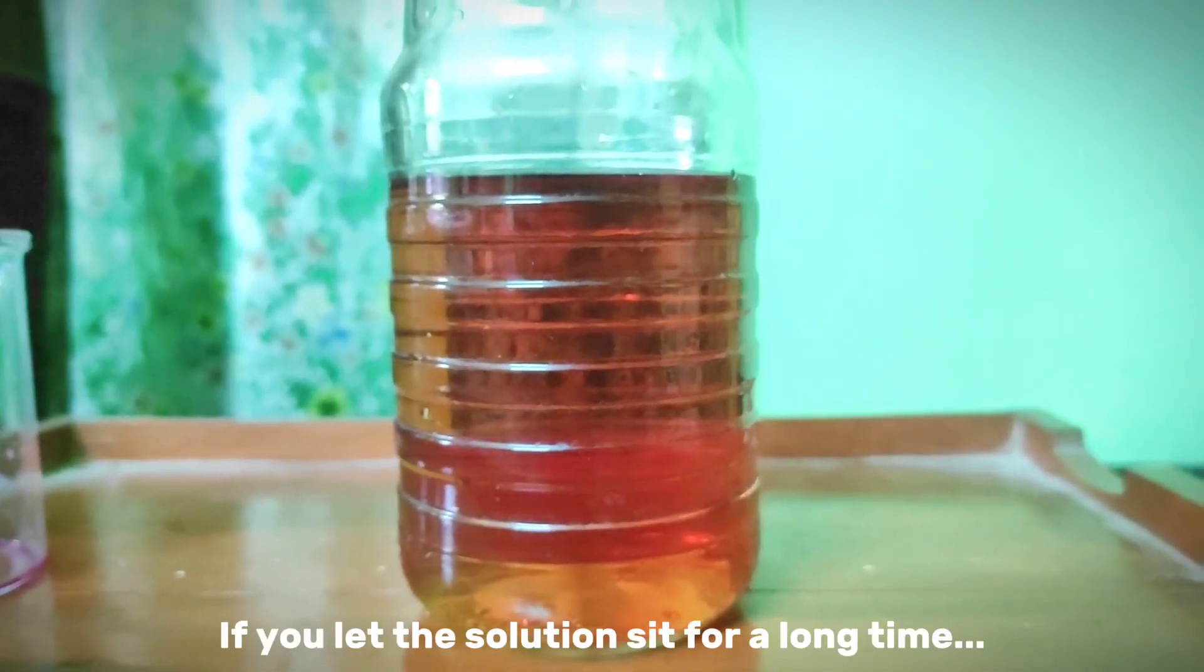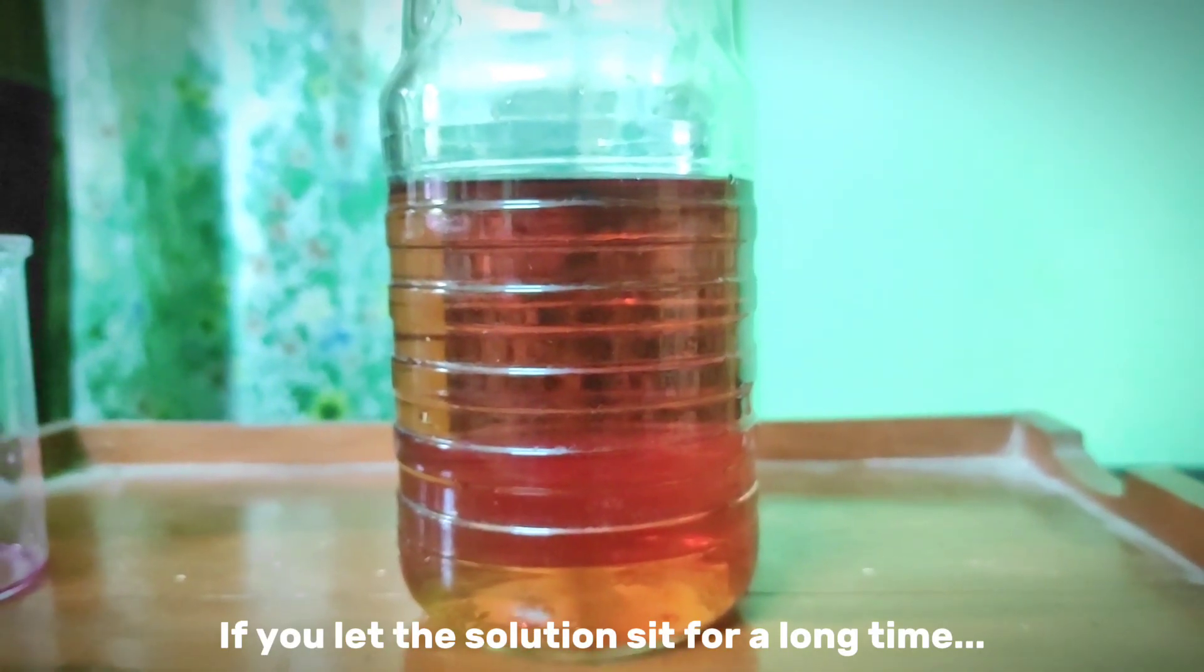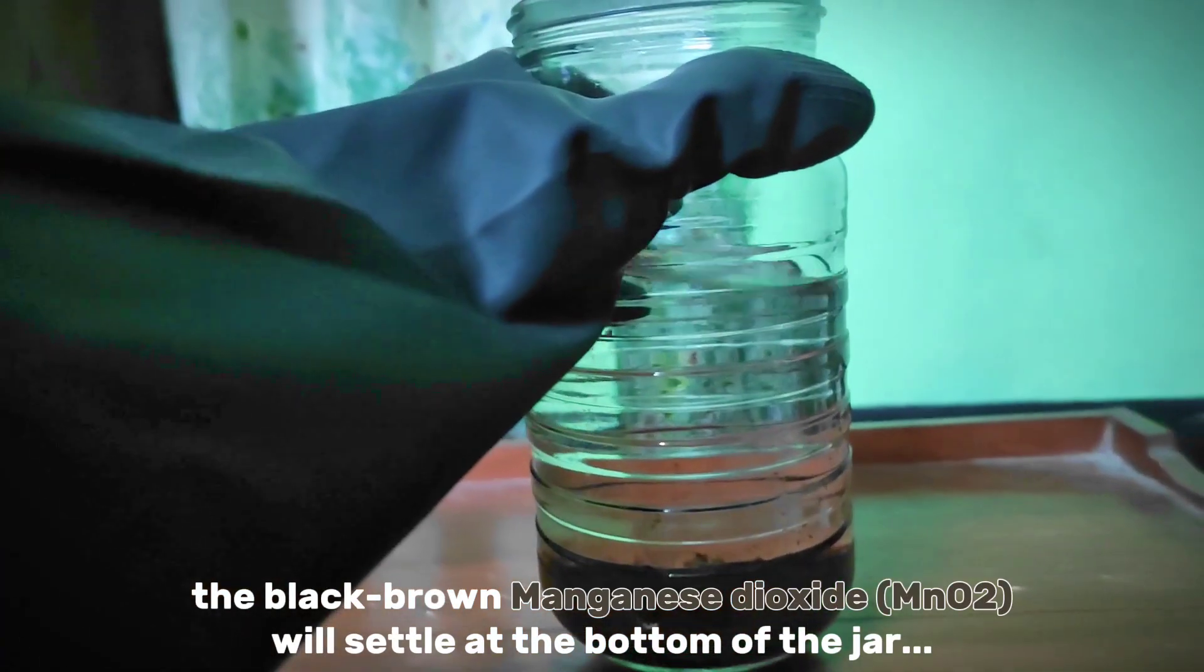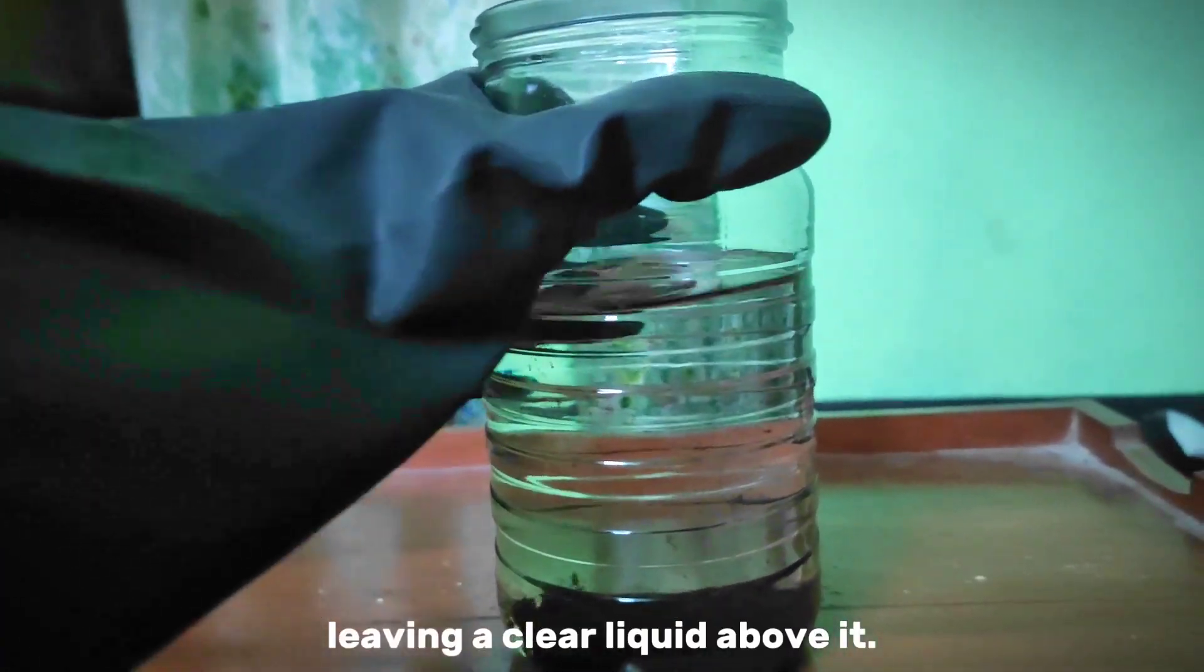If you let the solution sit for a long time, the black brown manganese dioxide will settle at the bottom of the jar, leaving a clear liquid above it.